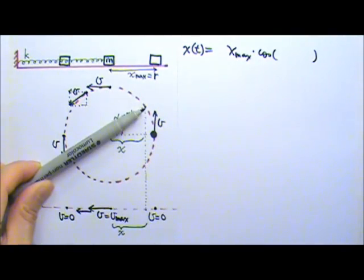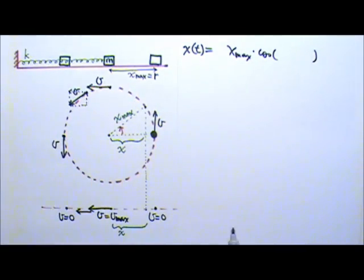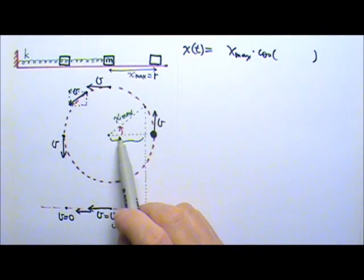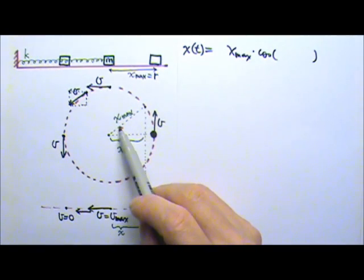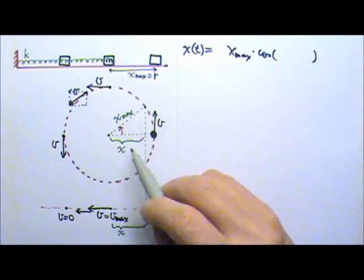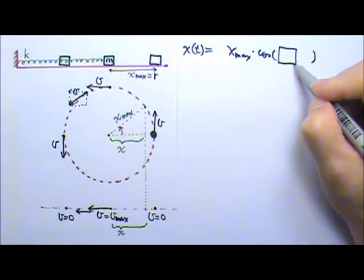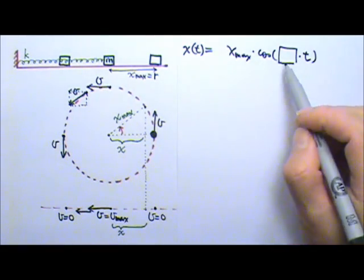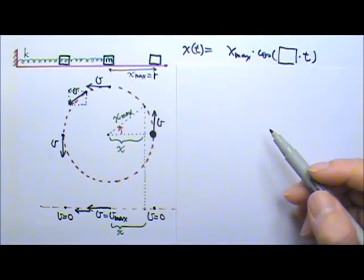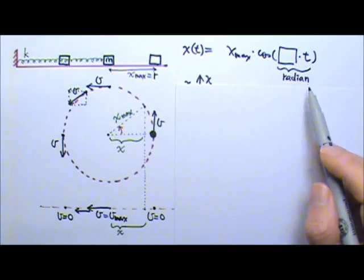Now this angle here is going to be a function of time. As time goes on, the angle is going to get bigger. If the object starts right here, the angle is going to be proportional to time. If you double the time, the angle is going to be twice as big. So the angle is going to be some constant times time. Let's find that constant. In this case, we use radians for the angle.